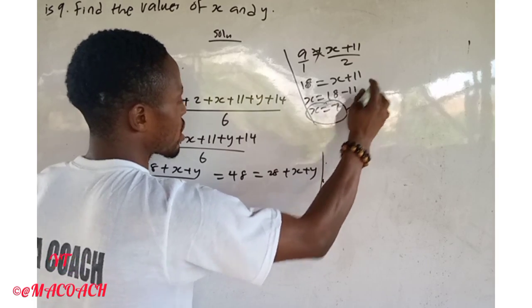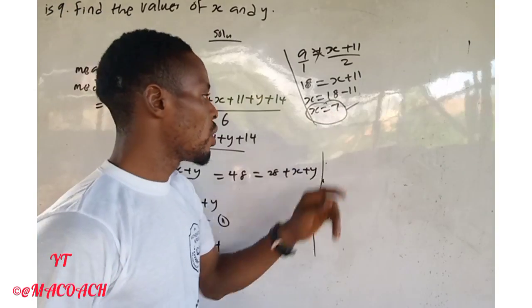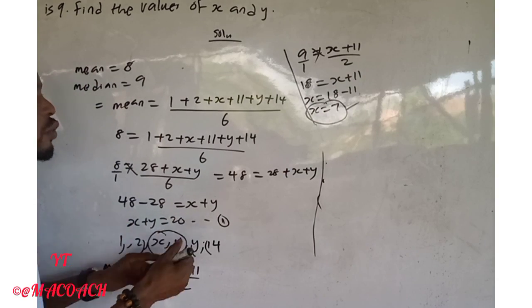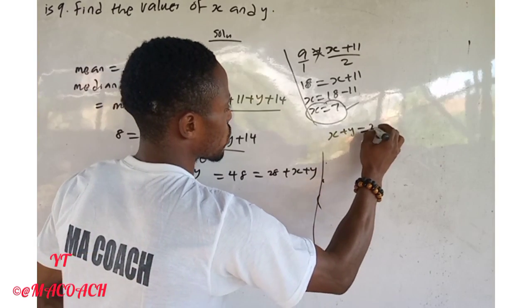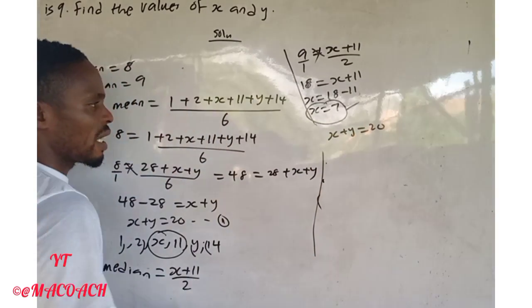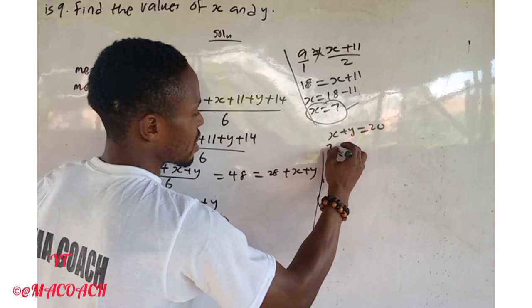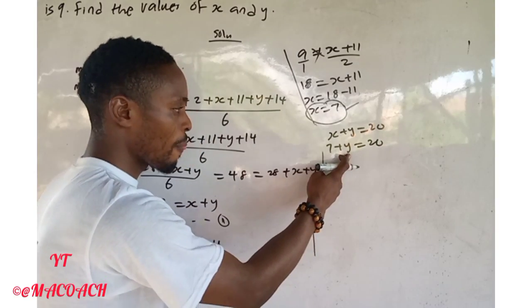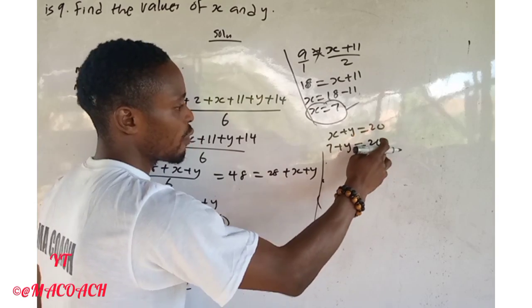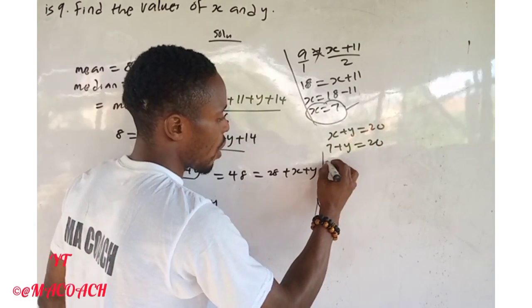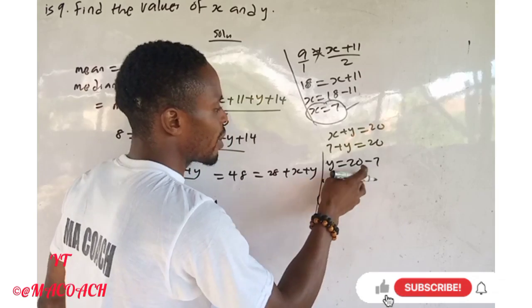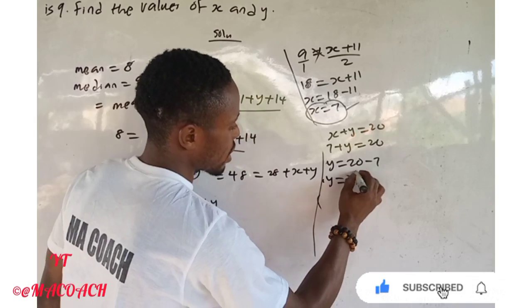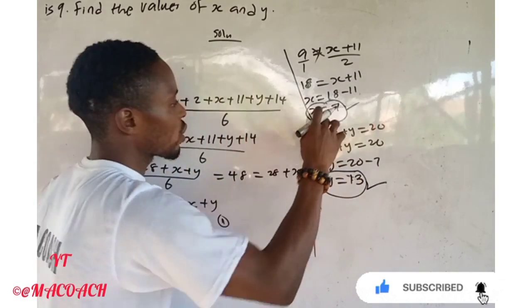Since s = 7, substitute into equation one: s + y = 20, so 7 + y = 20. Taking 7 to the other side: y = 20 − 7 = 13. So the value of y is 13.